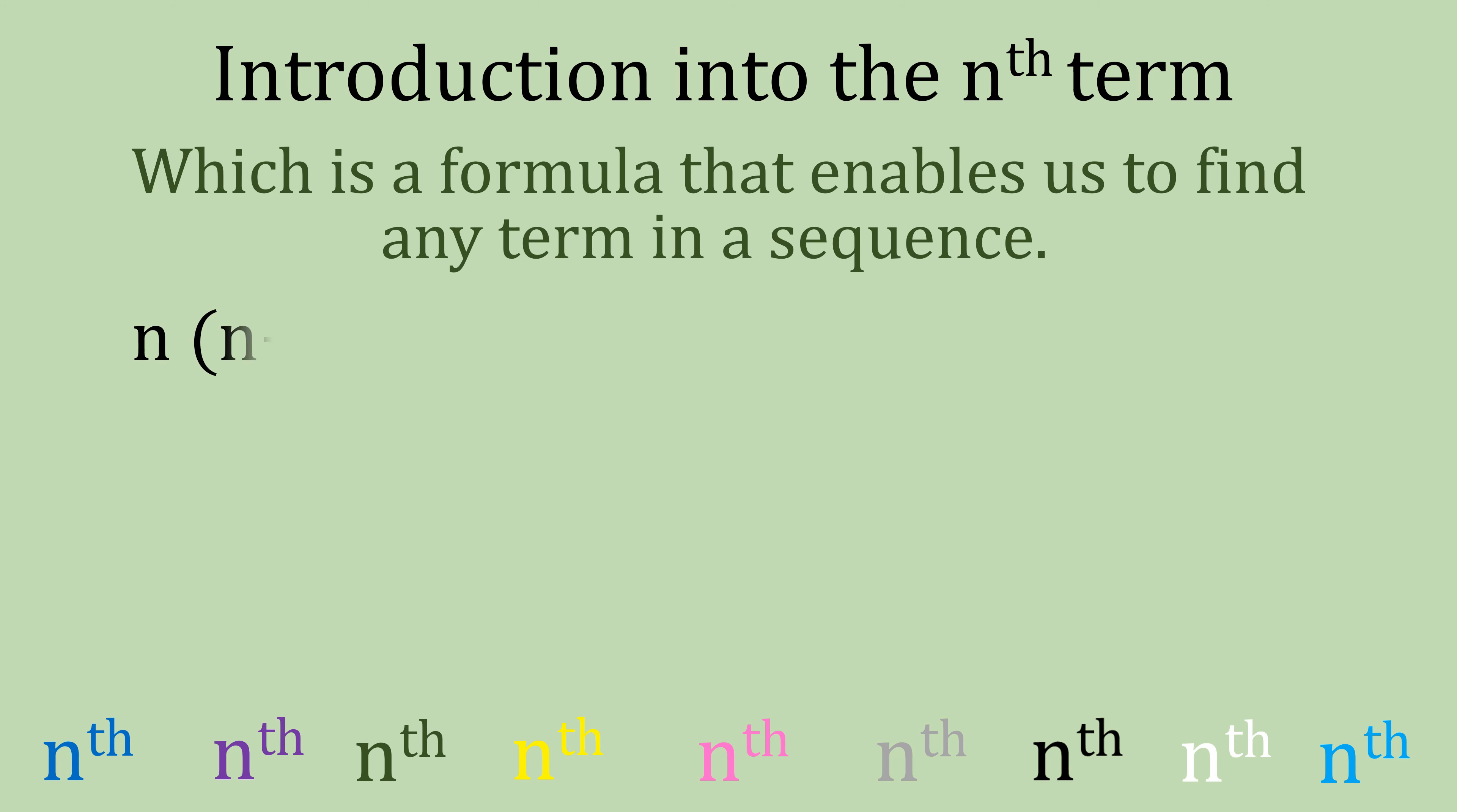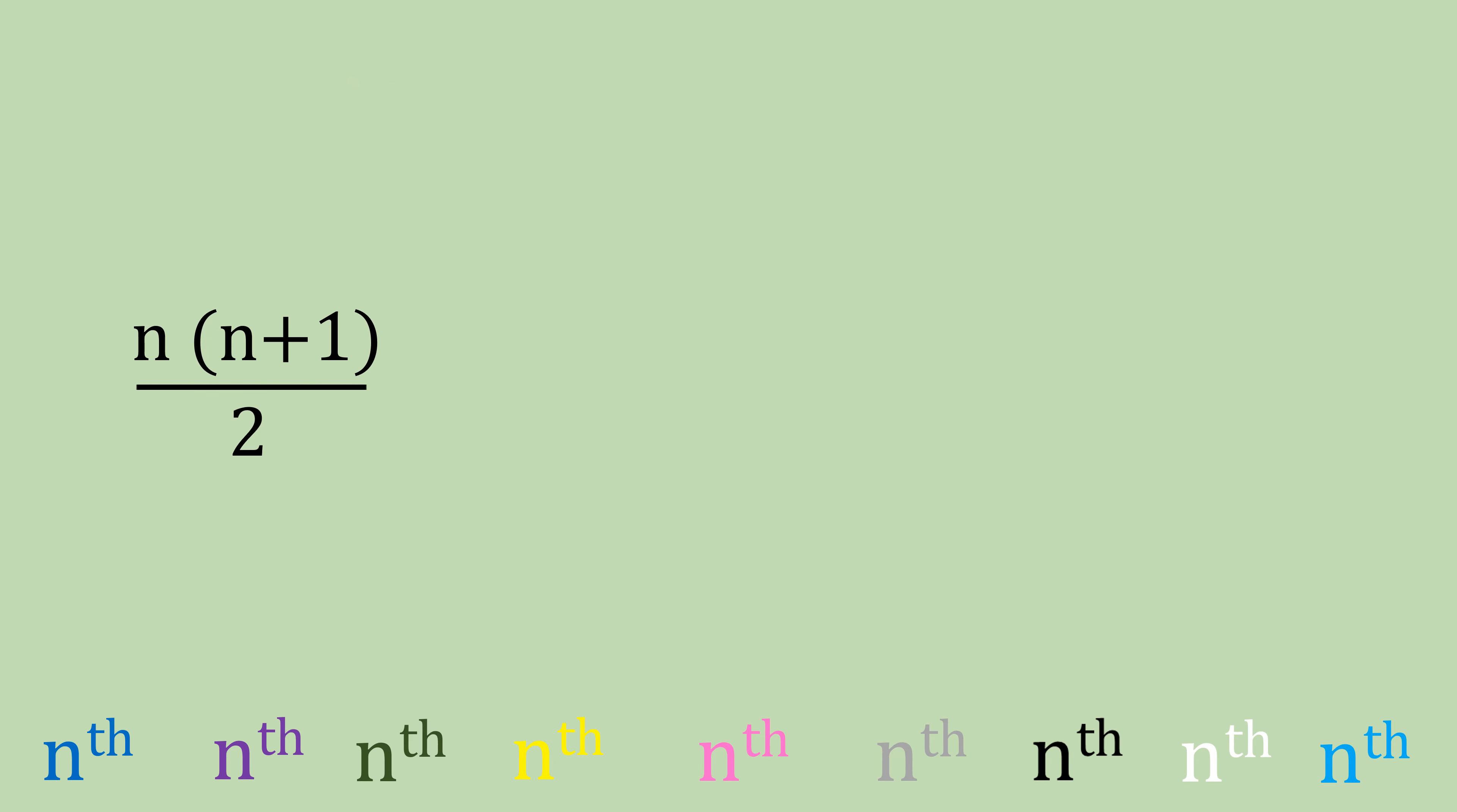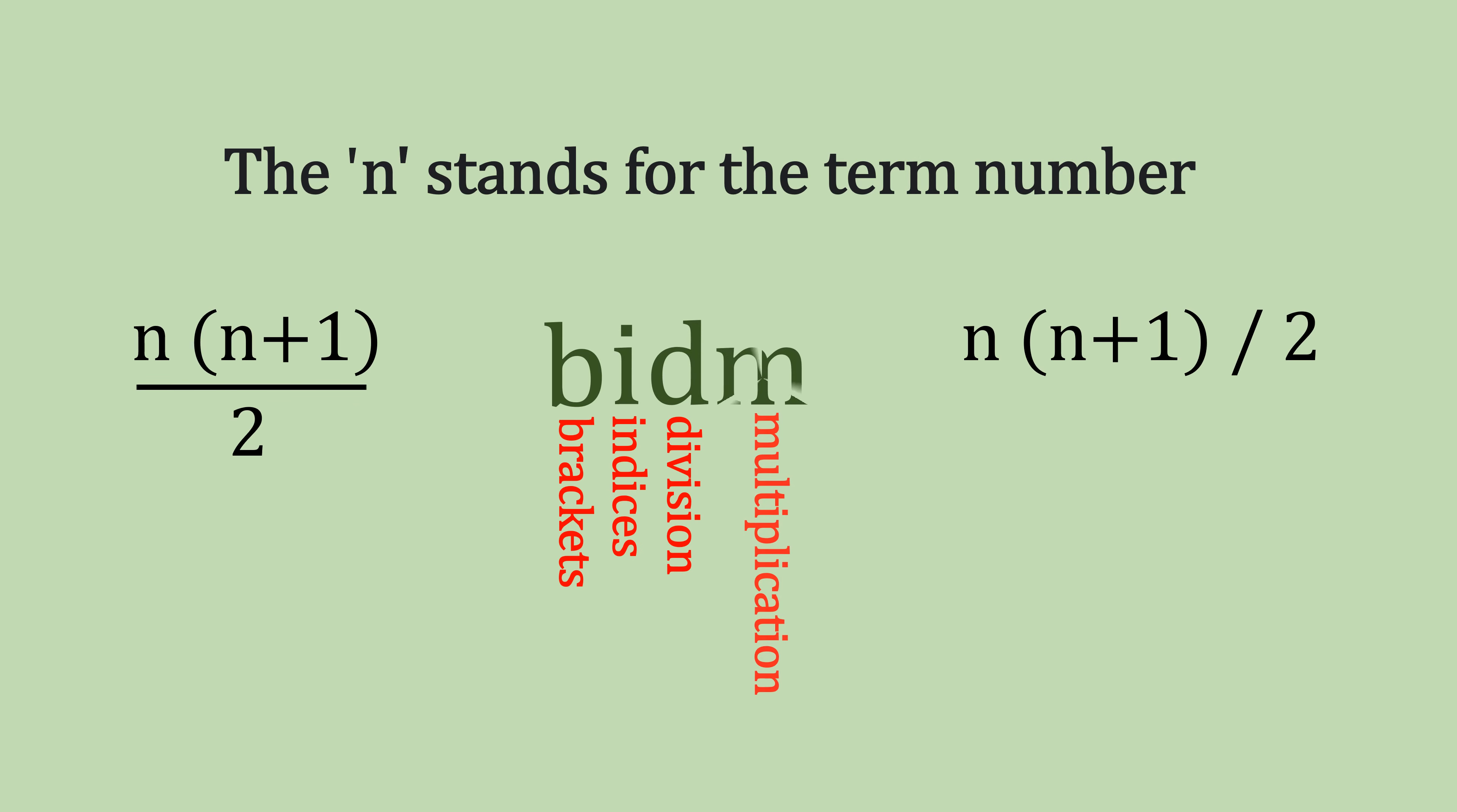We're going to be looking at the formula for a triangular number. So we have n open brackets, n plus one, closed bracket, divided by two. It can be written out like this or like this. And because we have more than two operations, we need to be using BIDMAS.